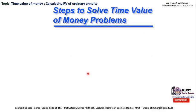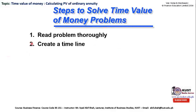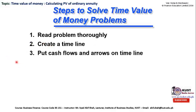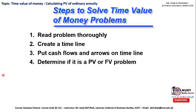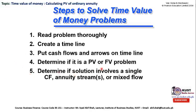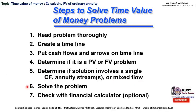As mentioned in my previous lectures, the steps to solve time value of money problems are: first, read the problem thoroughly; then create a timeline; put cash flows and arrows on the timeline; determine if it is a present or future value problem; determine if the solution involves a single cash flow, annual stream, or mixed cash flows; solve the problem; and finally use a financial calculator for a counter check.